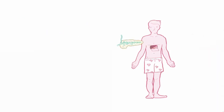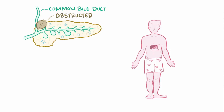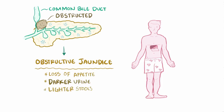The location of the tumor can affect the symptoms as well. For example, if the tumor is in the head of the pancreas, it can block the common bile duct, which leads to a backup of bile and causes obstructive jaundice. Individuals with this might have loss of appetite, darker urine, and lighter stools, as well as eventually developing pruritus, or itchy skin, and having their skin turn yellow.